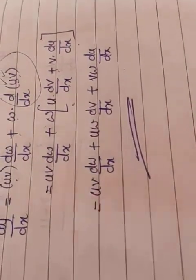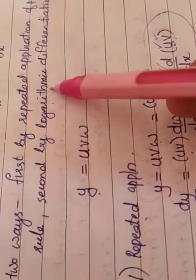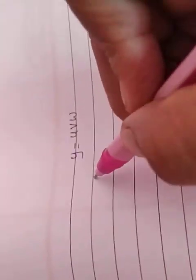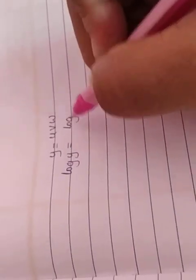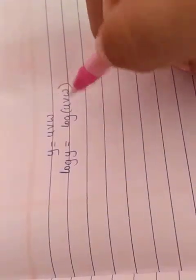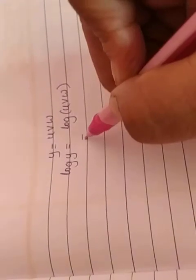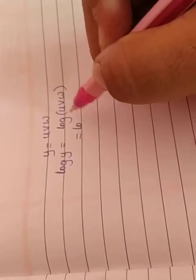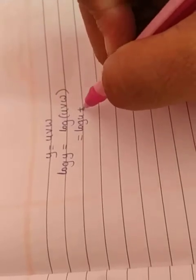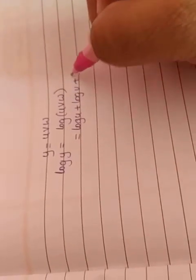We have to do the same with the second method. The second suggested method is logarithmic differentiation. So again, we take y = uvw. Logarithmic differentiation is suggested, so we have to take logarithm on both sides. Log y = log(uvw). The right side can be rewritten using log(ab) = log a + log b. So, log(uvw) = log u + log v + log w.